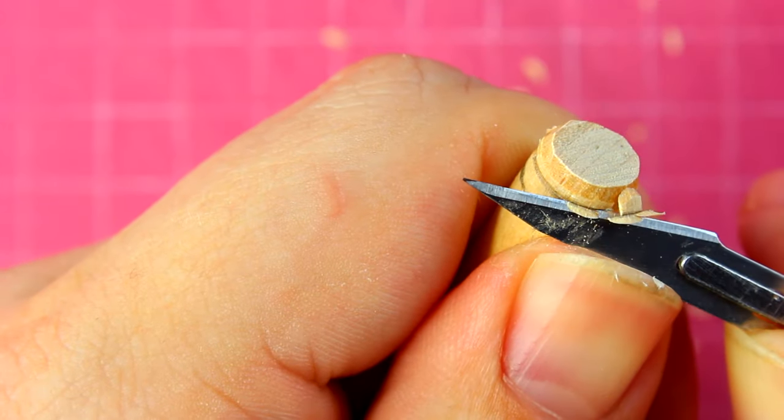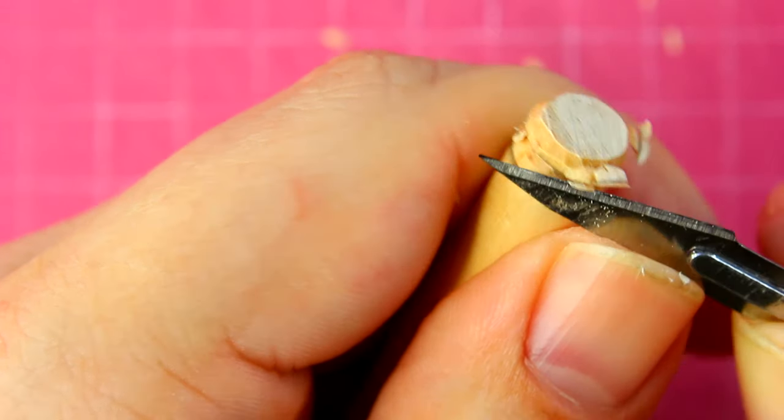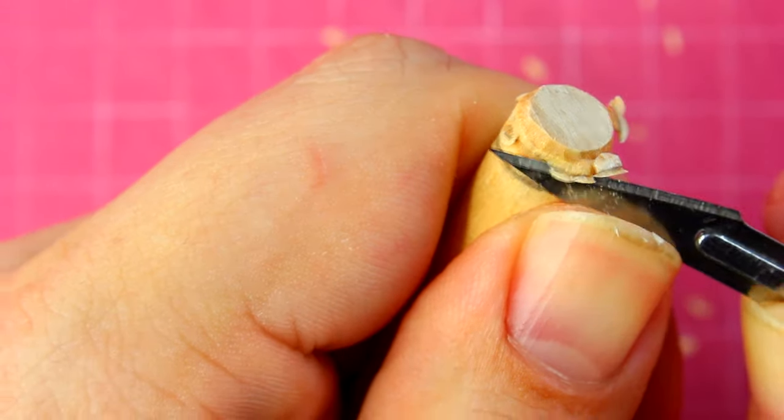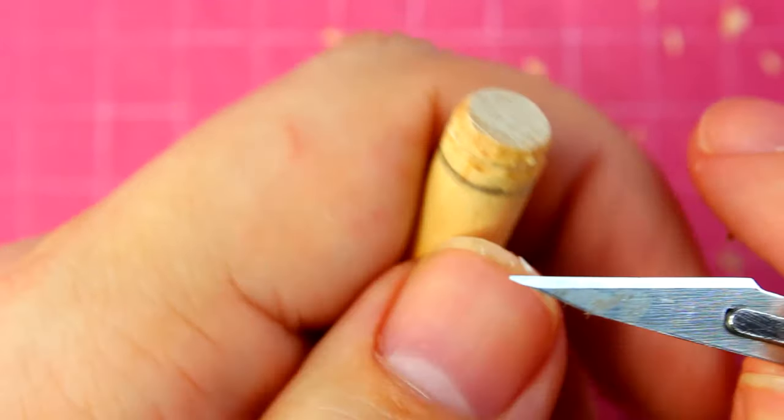Now I'll just start removing material. I'm just cutting little chips, one at a time, not trying to carve out a huge chunk at once. The smaller cuts are much easier to control and take less effort to make.